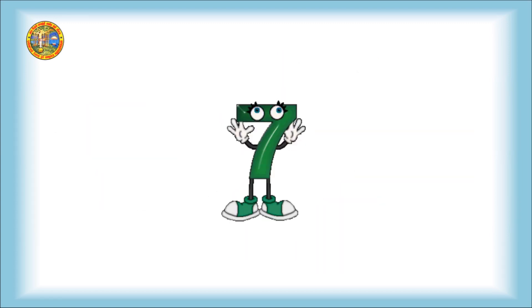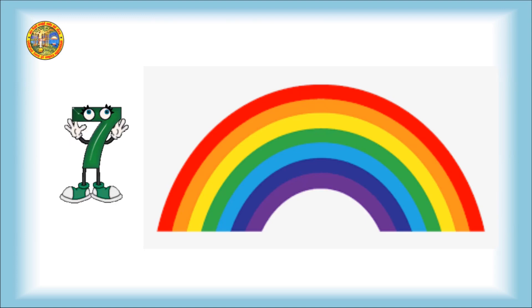I am number seven. This is a rainbow. The rainbow has seven colors. One, two, three, four, five, six, and seven.